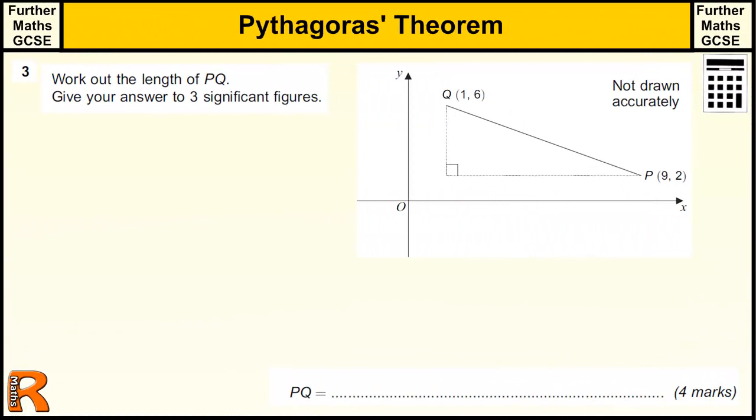Pythagoras' Theorem for third mass GCSE, which is a level 2 qualification. Here we've got a question that asks us to find the length of the line PQ. We know it's Pythagoras because they've been very kind to draw us a nice right-angled triangle.